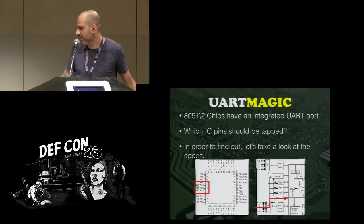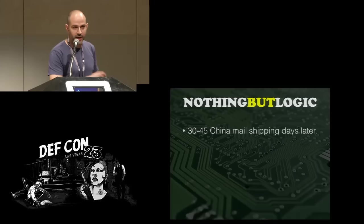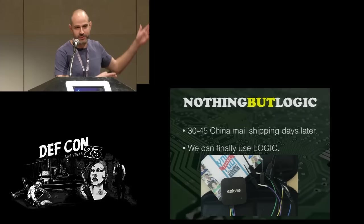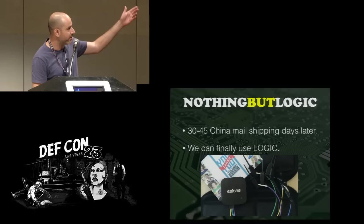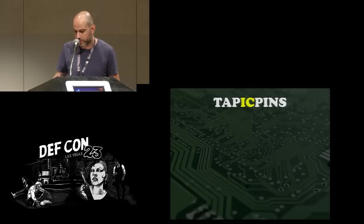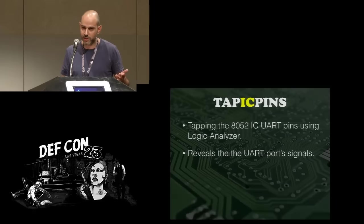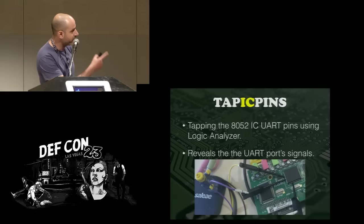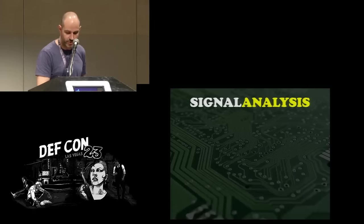Challenge accepted. So, 30 to 45 China mail shipping days later, we can finally use logic. We ordered a device called a logic analyzer — simply called Logic. It has a couple of wires with clips; you clip them onto the IC pins and then you can see the electronic signals. What we need to do is use this logic analyzer, tap those pins, and look at the signals going on there during the firmware upgrade process. We connected to the RX port, TX port, and ground so we can differentiate ones and zeros.